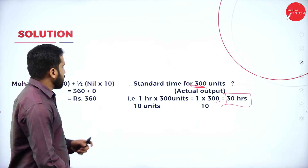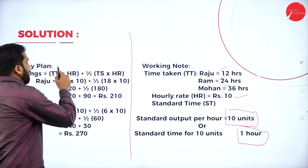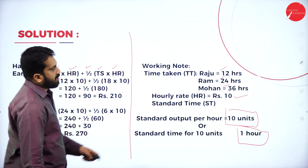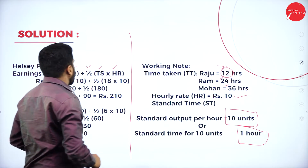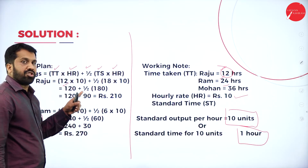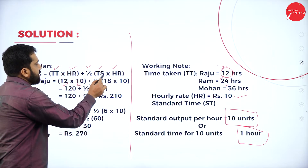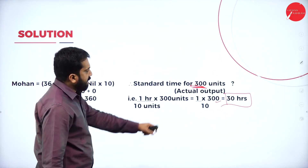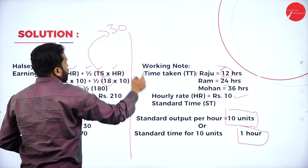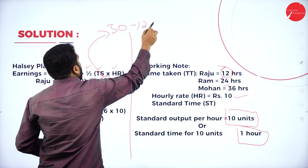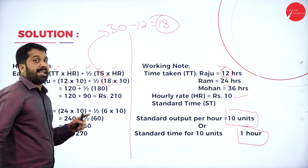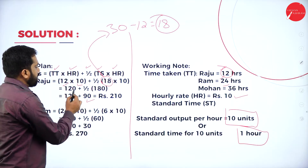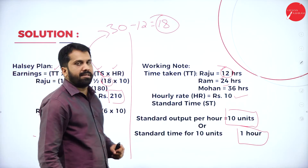Now applying the Halsey plan formula. For Raju (time taken = 12 hours): standard time is 30, so time saved = 30 − 12 = 18 hours. Calculation: 12 × 10 = 120, plus half of (18 × 10) = half of 180 = 90. Total earning for Raju = 120 + 90 = 210.